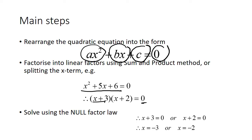So given these two factors here, this is equal to zero if x plus 3 is equal to zero, or x plus 2 is equal to zero. Now we've got simple linear equations to solve. So the first one: x plus 3 equals zero, so x equals minus 3. Or x plus 2 equals zero, so x equals minus 2.